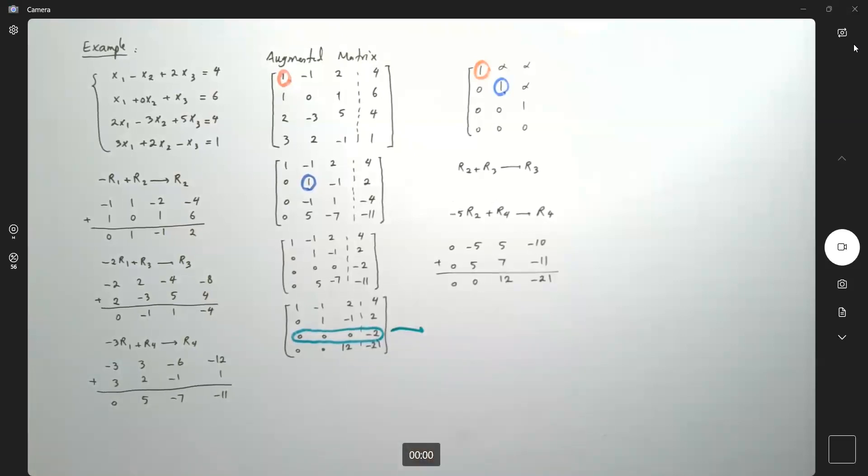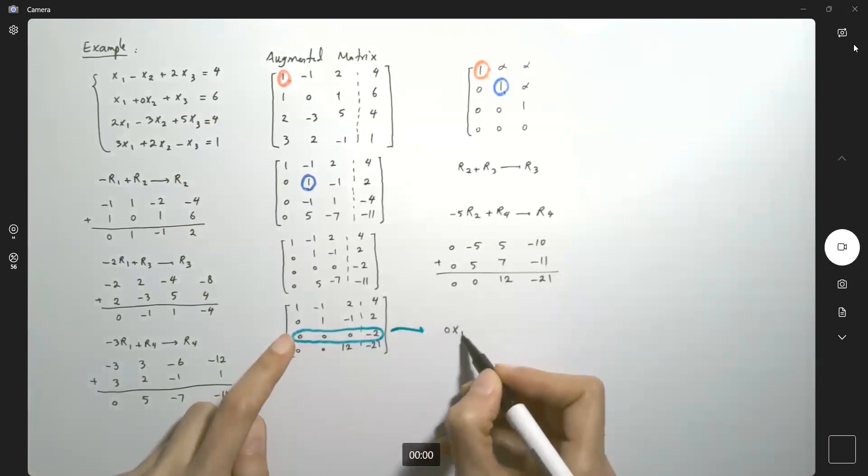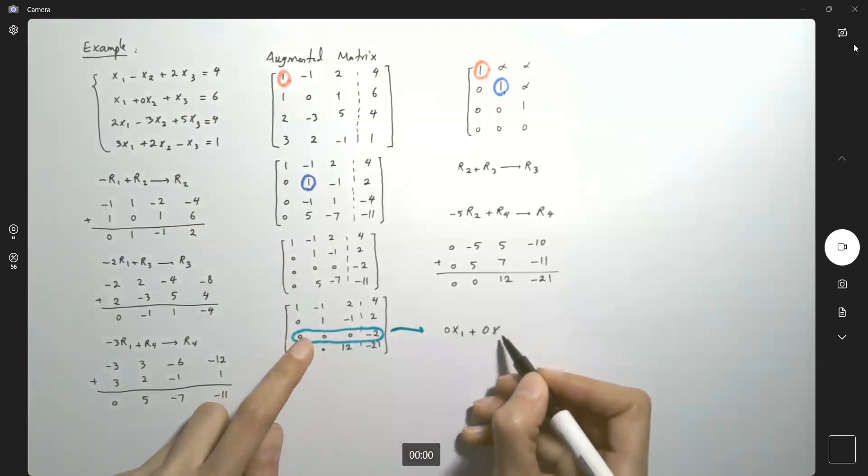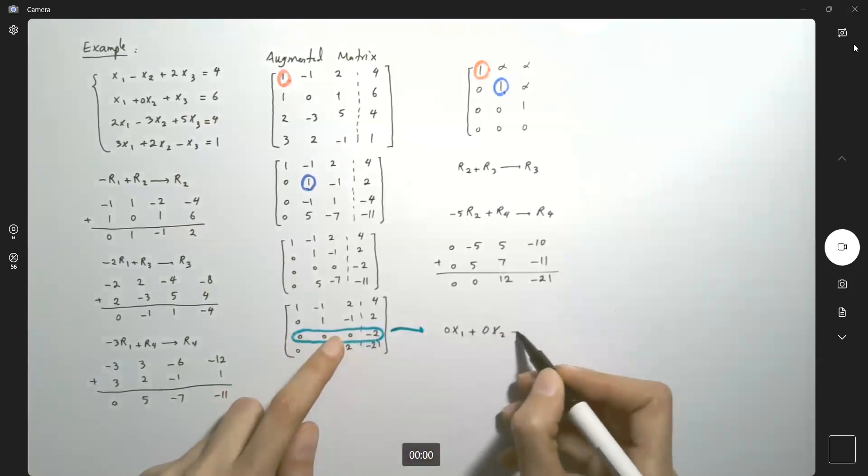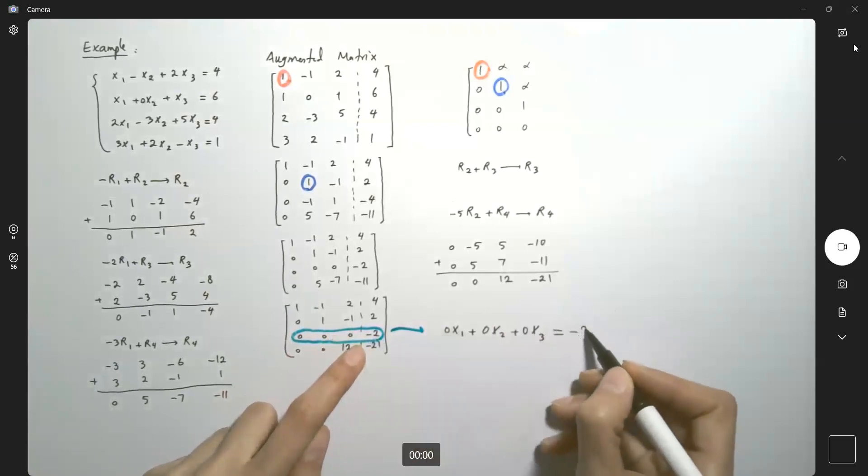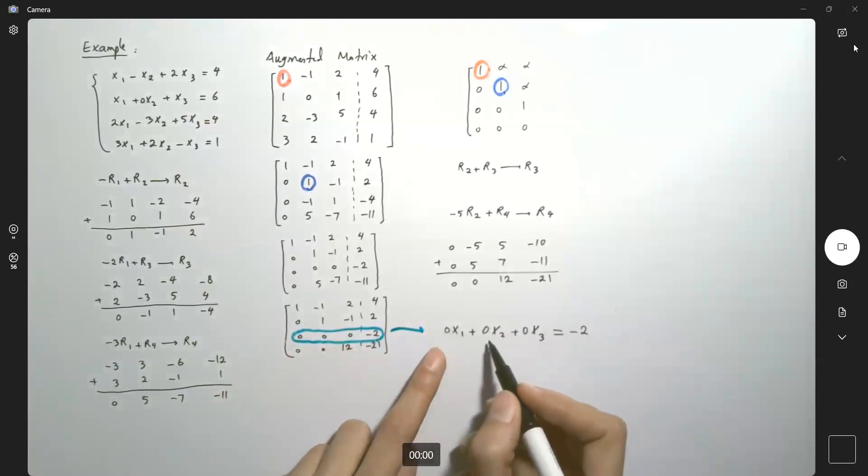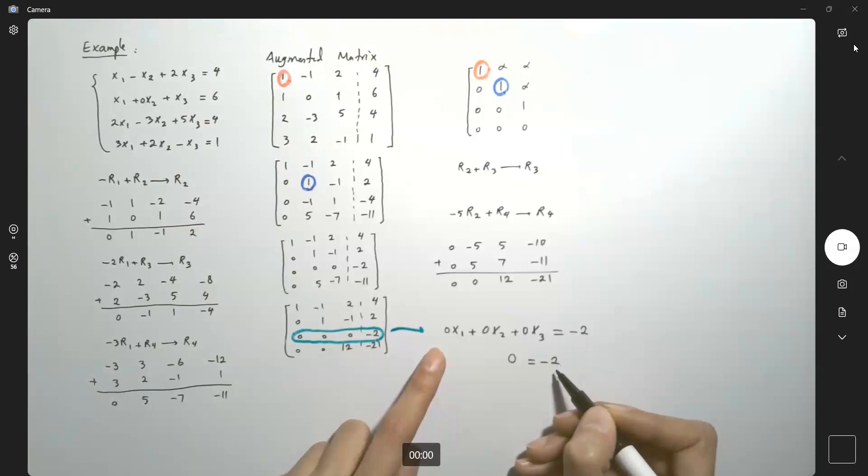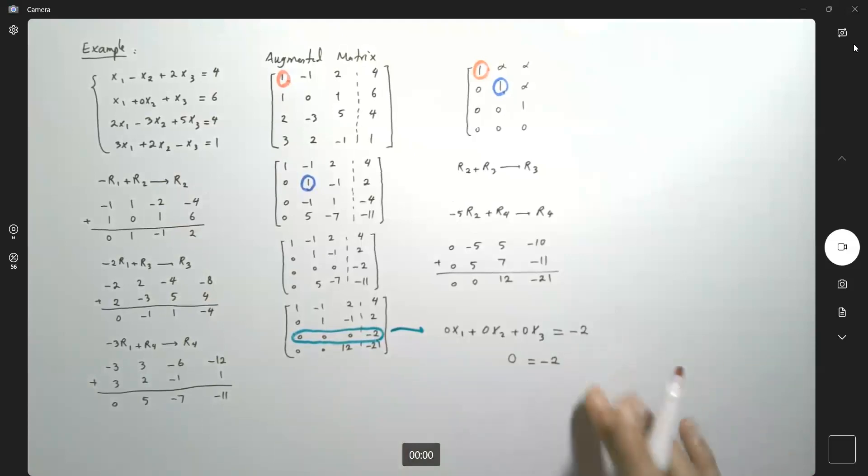You're going to say that, hey, this says the coefficient of x1 is zero. The coefficient of x2 is zero. The coefficient of x3 is zero. And on the right hand side, you have negative two. Well, zero plus zero plus zero is zero. Zero is equal to negative two. This is a no, no situation. It says zero is equal to a negative number. So when you have no, no situation, it means that there is no solution.